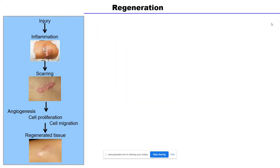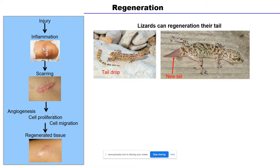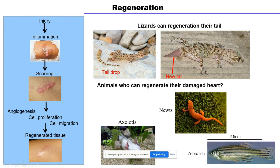If you look at regeneration, like regeneration of the skin, we can achieve that with scar formation at a wound site and then see regenerated skin. We can also regenerate the liver; however, we can't regenerate the heart or most of our organs. Interestingly, other organisms like lizards can regenerate their tail, and many animals like newts, axolotls, and zebrafish can regenerate their heart — and not only their heart, but also many organs like their brain, spinal cord, limbs, and other organs.